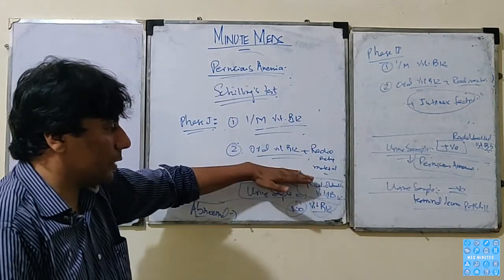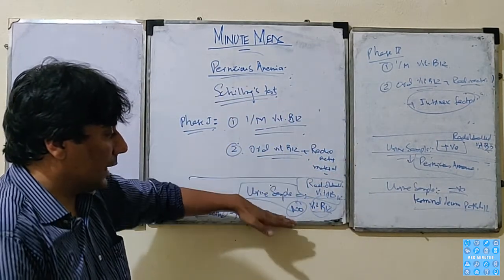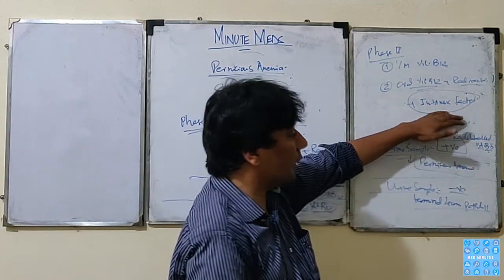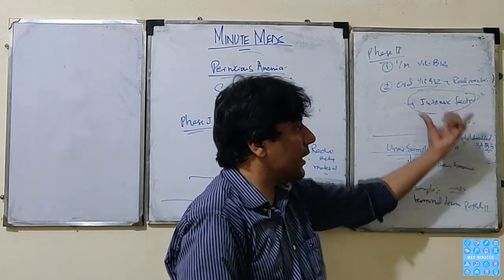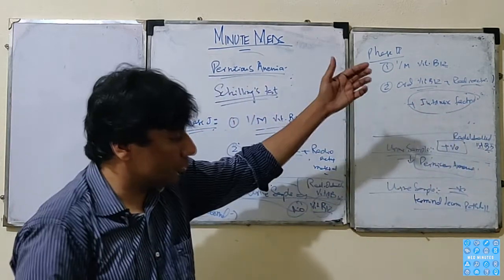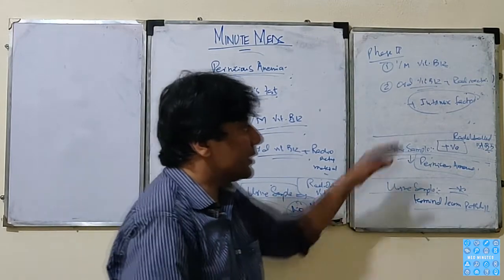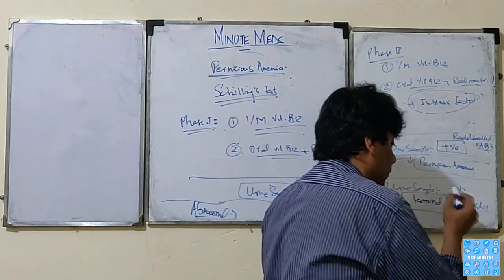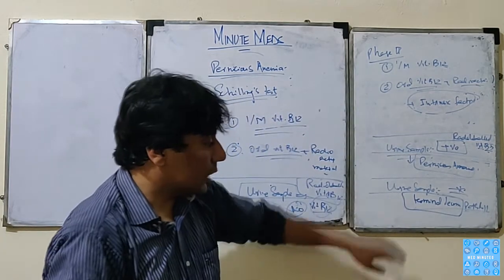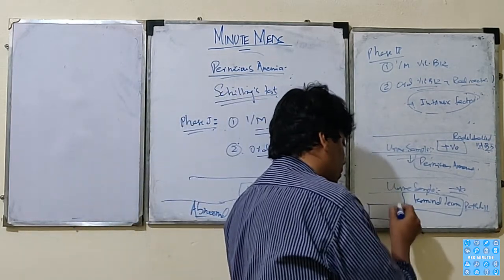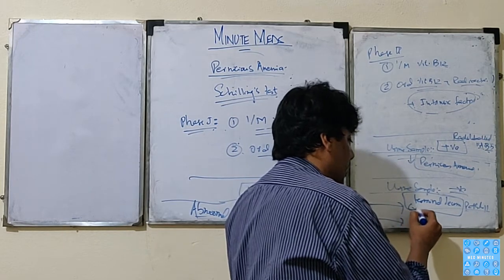First phase tells us this patient has intrinsic factor deficiency. It got corrected by giving intrinsic factor. If it doesn't get corrected even with intrinsic factor, it means this is not intrinsic factor deficiency. There is a problem in the site where it gets absorbed, so terminal ileum pathology. Malabsorption is caused by this.